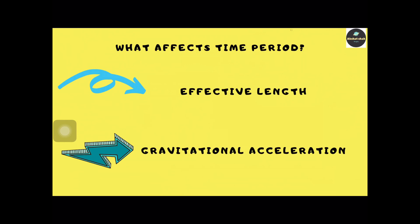Time period is directly proportional to the square root of effective length. However, here it does not make a difference as we are using the same simple pendulum with the same effective length. So what's left is gravitational acceleration.